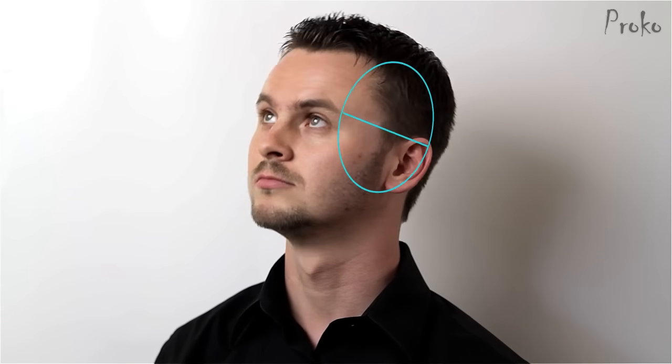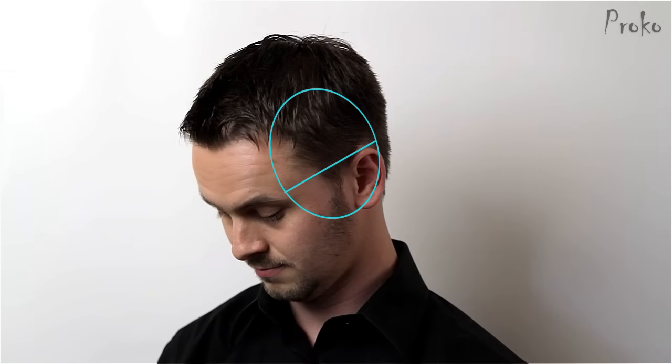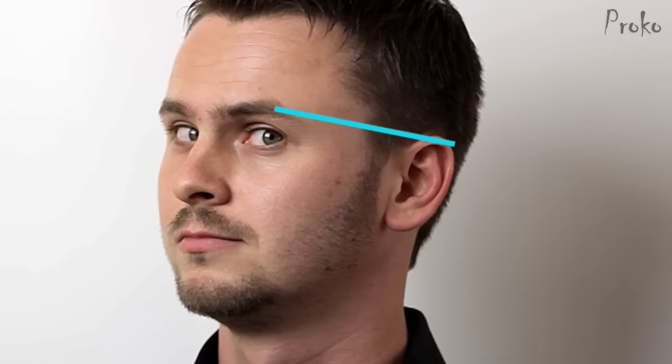If the head is tilted up, the angle will point up. And if the head is tilted down, the angle will point down. The degree of the tilt will determine how steep to make this line. I like to use the angle from the ear to the brow.